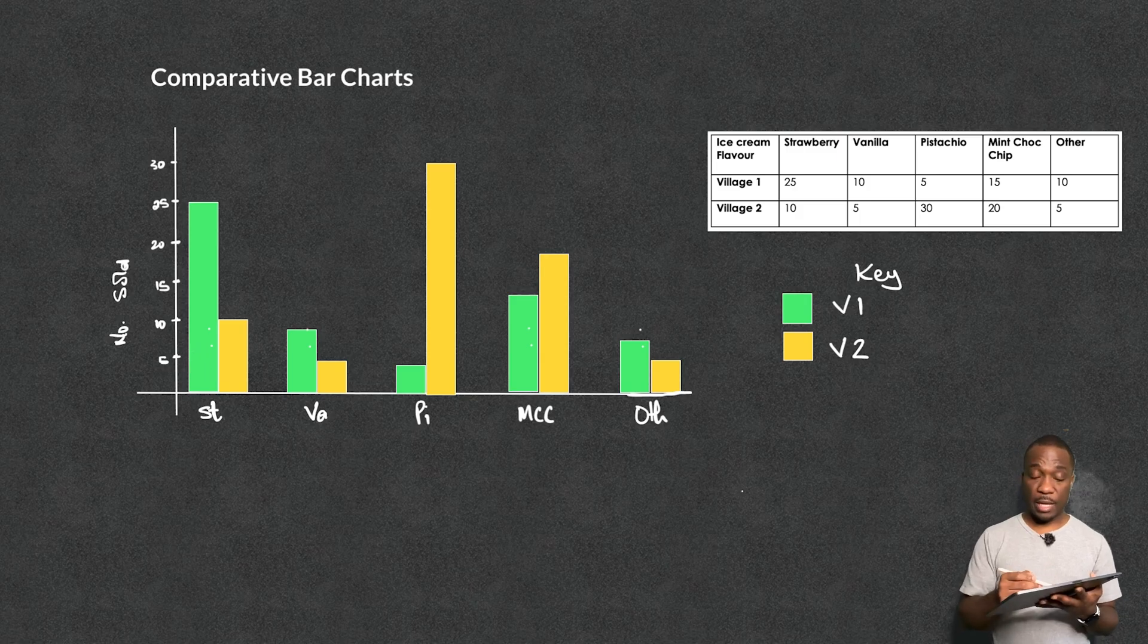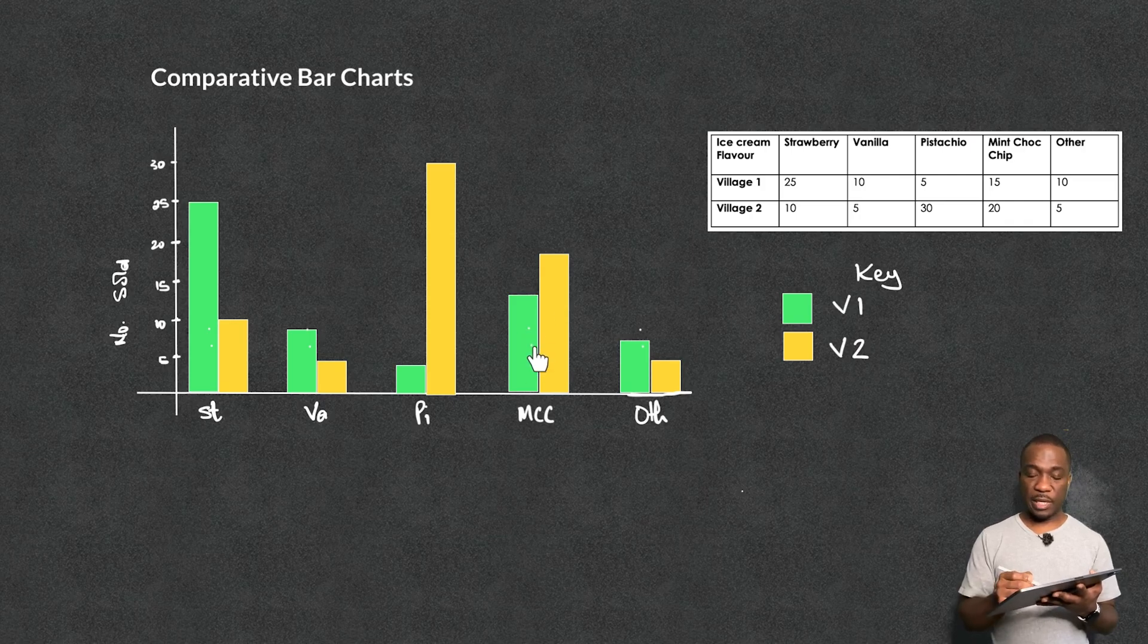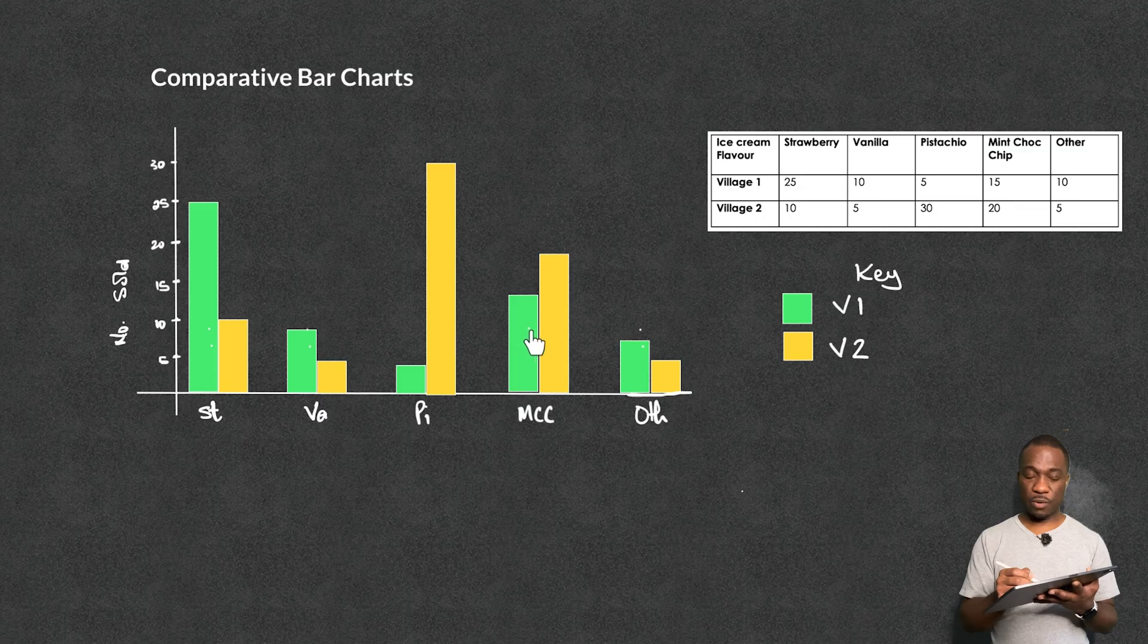I also need to buy quite a bit of mint choc chip because between the two villages, I would sell normally about 35 of those. How did I get that? Add the two. So together, this is quite a lot of sales here.